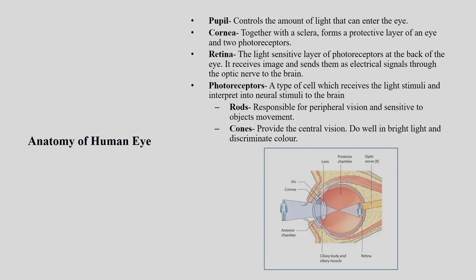Now let us understand some important terminology which will help in the eye tracking process. First is the pupil — it controls the amount of light that can enter the eye. The pupil can get constricted or dilated, helping you understand what amount of light you are allowing inside your eye.